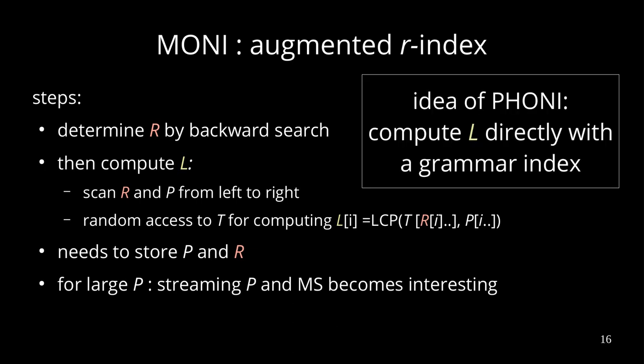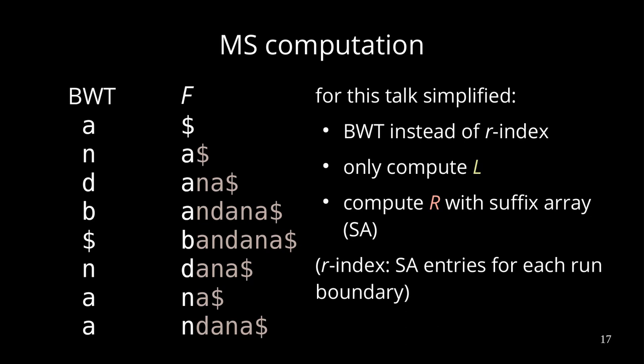So our idea is to compute L directly with a grammar index. To show our idea, we use some simplifications: on the left-hand side you see not the r-index, but a plain BWT, and I only show how to compute the L-array. For computing R, we use the suffix array, which is kind of trivial. For the r-index we don't have the full suffix array available, but only suffix array entries at the run boundaries, and that still works.